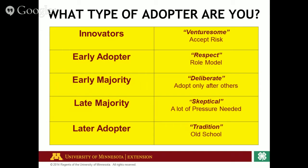The next adopter is your early adopter. They're respectful of new products and enjoy being a role model, but they're still going to be cautious — they'll do a little bit of homework on the concept or item prior to deciding to use it. Our early majority are very deliberate. They're going to adopt something only after others have, after they've seen how it works, gathered some feedback, and done a lot of research on the process or idea.